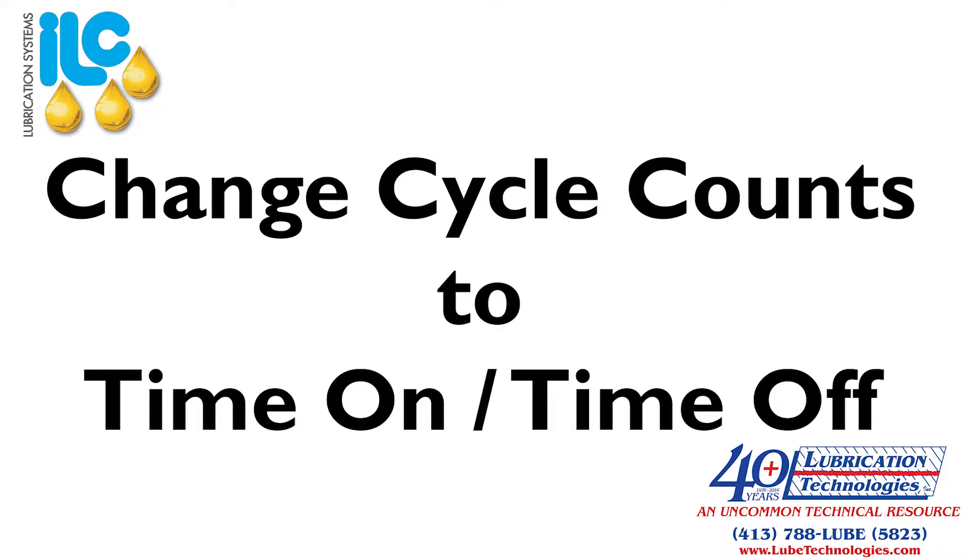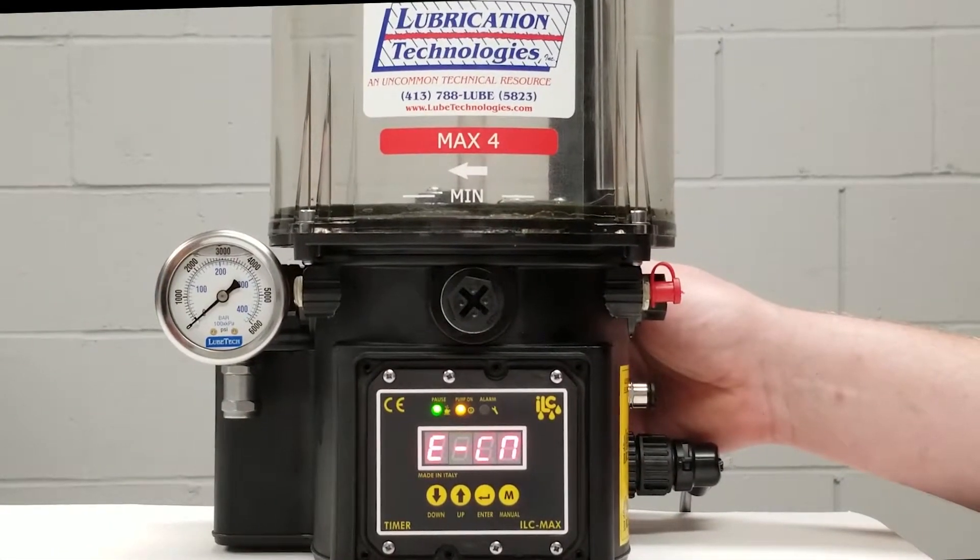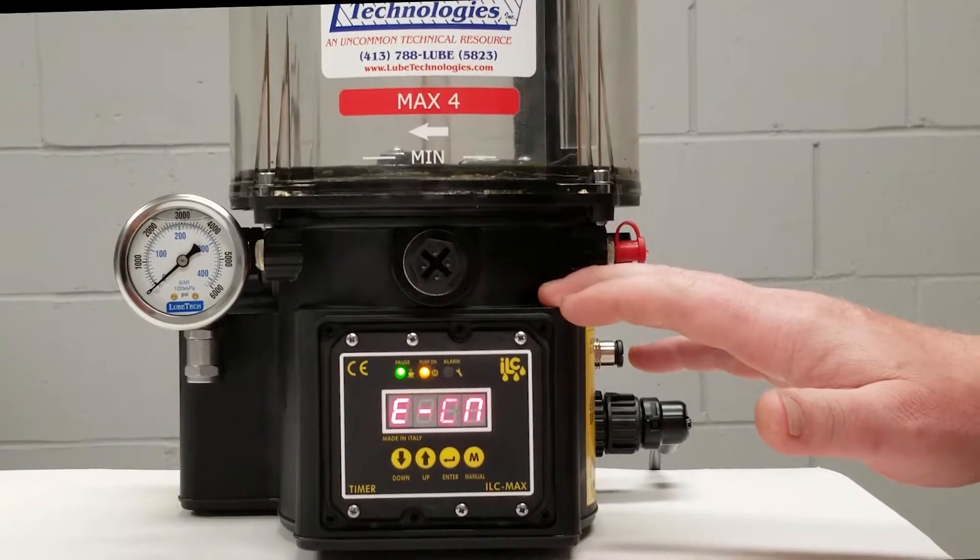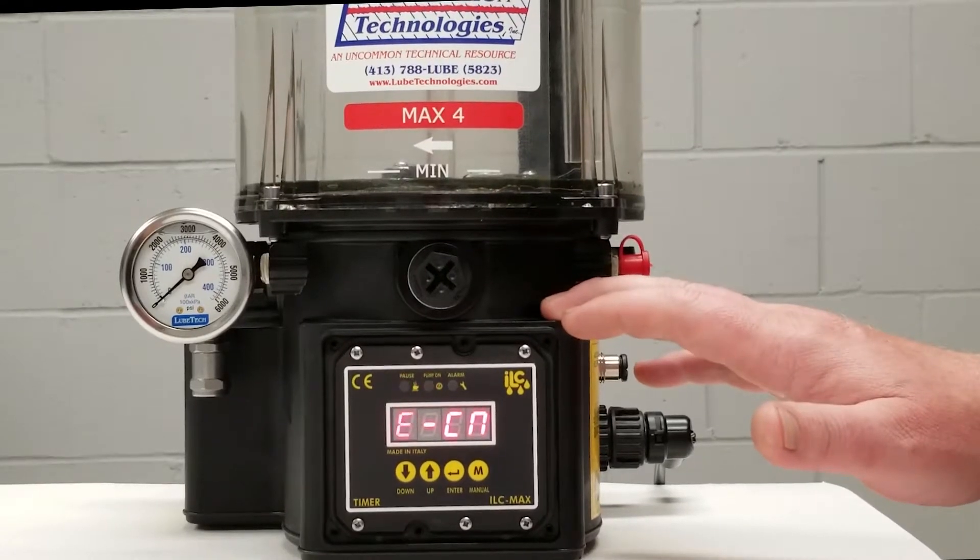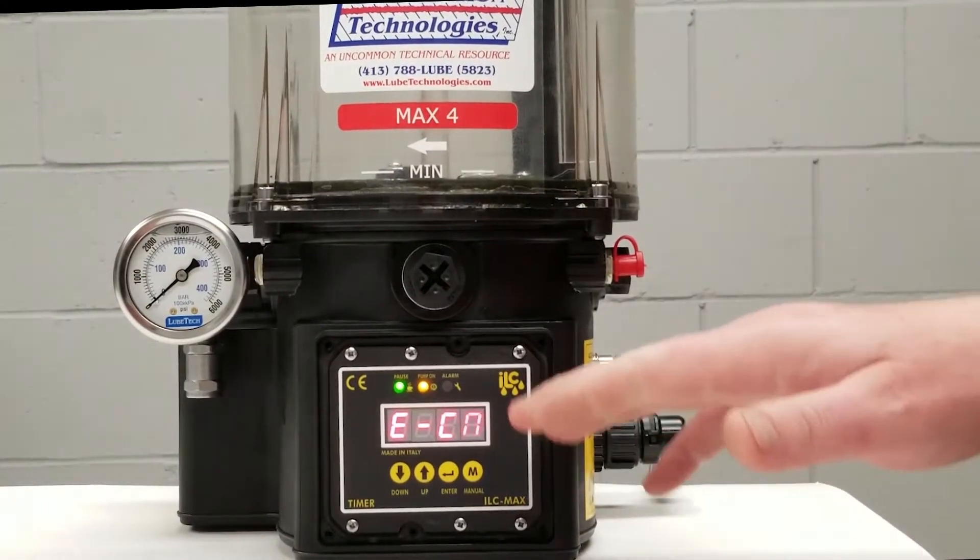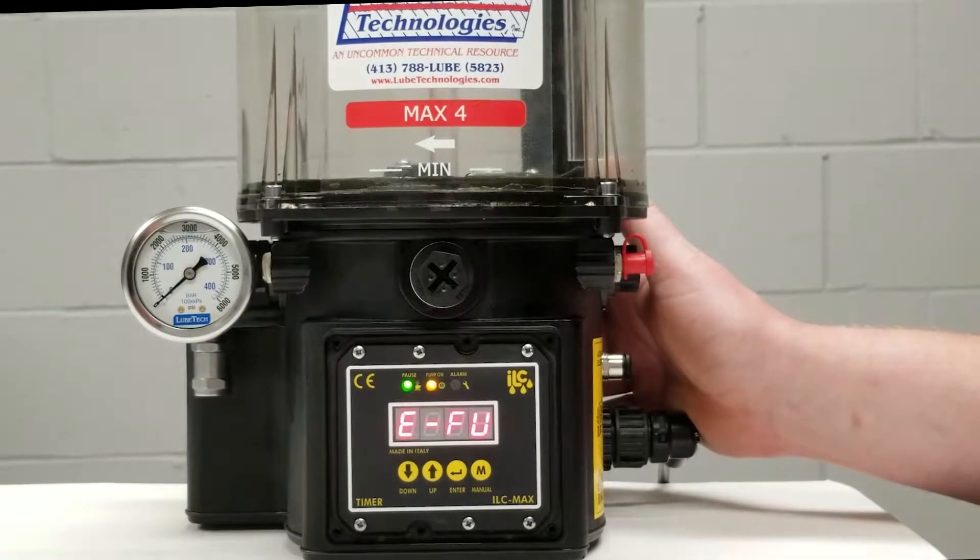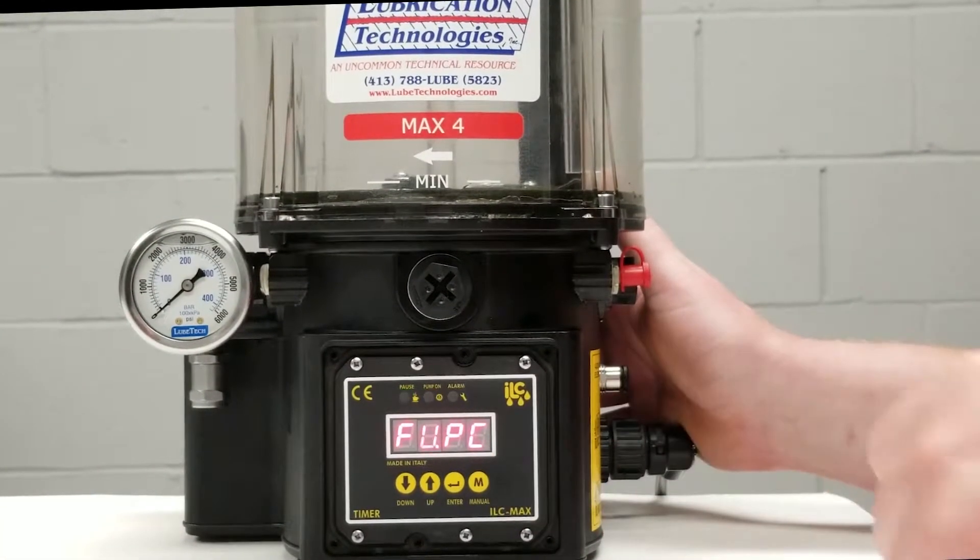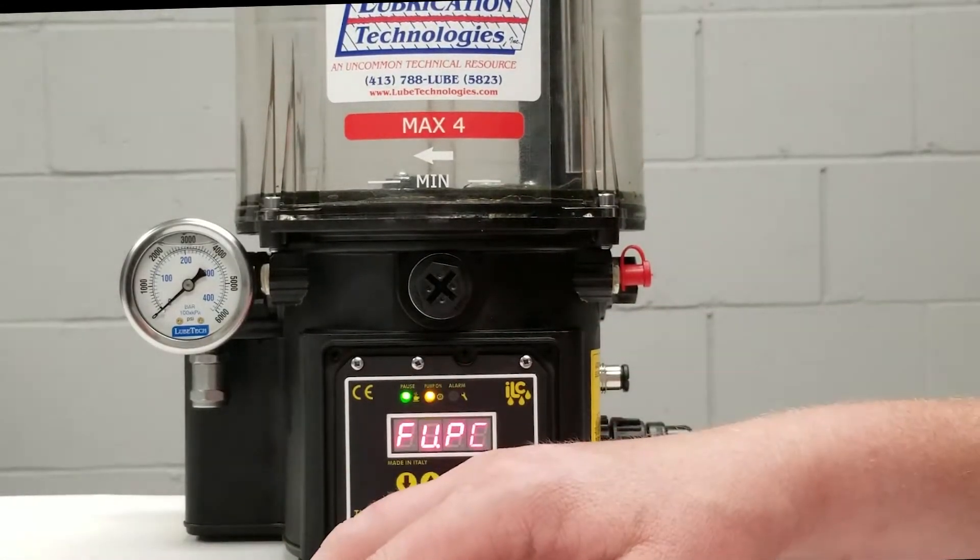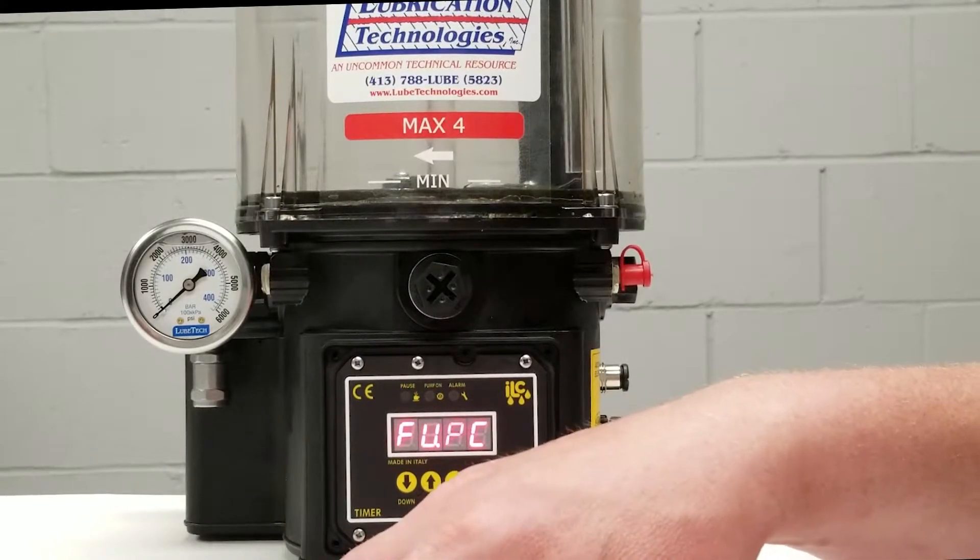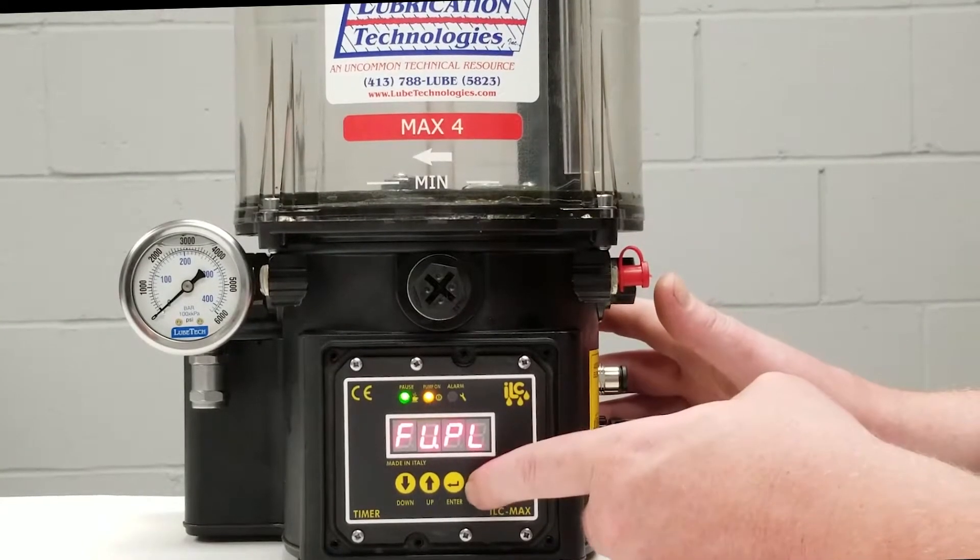We're going to press and hold our enter key to get into the programming mode and what we're going to be doing is we're going to be changing our time from our cycle counts to time on and time off because right now this pump is programmed to count rotations. So we're in our programming mode again which is E-CN. What we're going to do is go to E-FU and we're going to press our M button and what we're going to be looking for is, again we have a document we can send to our customers that will help walk you through this, but we need to be in FU-PL.